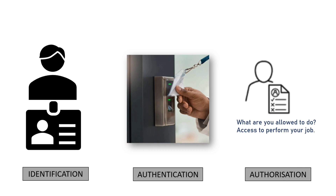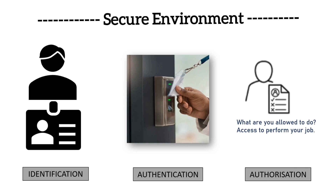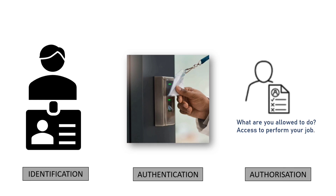Suppose you are in one department on a certain floor and want to access another department on a different floor, but your job does not require you to visit that floor — then you won't be authorized to go there. You will only be authorized to visit your own floor. This is based on the permissions and rules assigned to your user ID. Identification, authentication, and authorization work together to create a secure environment. Without proper identification and authentication, unauthorized individuals might gain access to sensitive data or resources.